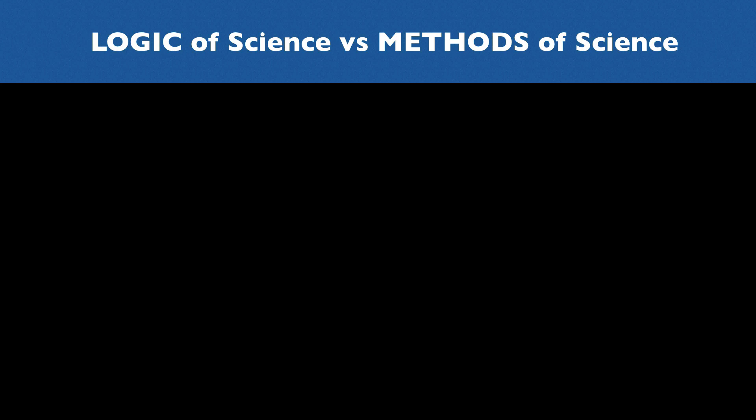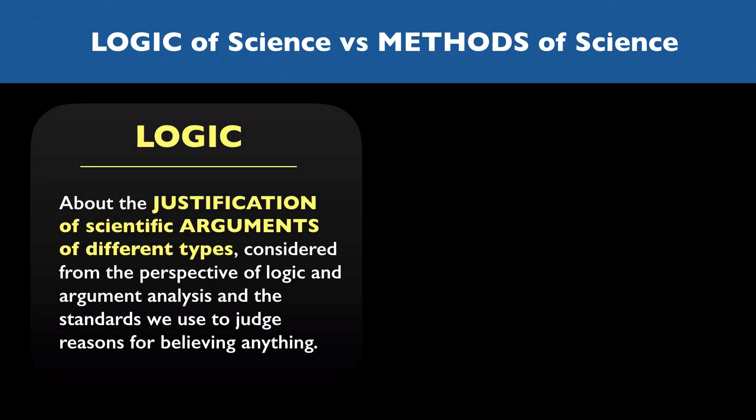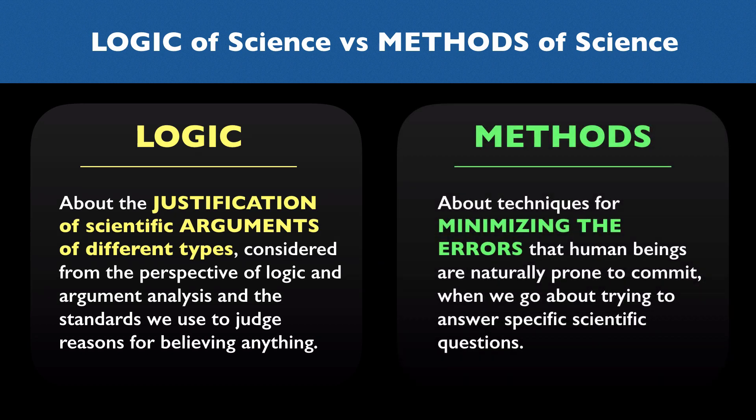Here's one way to conceptualize the difference between what I'm calling the logic of science and the methods of science. The logic of science is primarily about the justification of scientific arguments of different types, considered from the perspective of logic and argument analysis and the standards we use to judge reasons for believing anything. Because it's couched in the language of logic and argumentation, it's going to be very general and abstract, because it's meant to capture the reasoning behind whole categories of scientific inferences. The methods of science, on the other hand, are primarily about techniques for minimizing or neutralizing the errors in judgment and reasoning that human beings are naturally prone to commit when we go about trying to answer specific scientific questions.